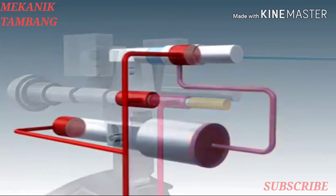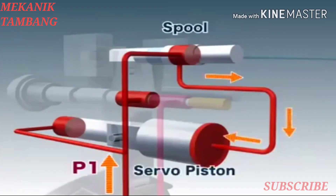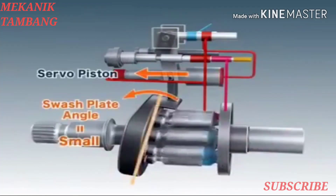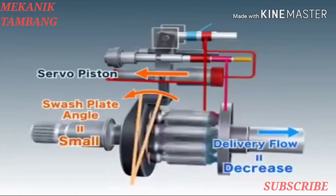Also, the delivery pressure of P1 passes through the spool and pushes against the larger side of the servo piston. As the servo piston moves, the inclination of the swash plate decreases, reducing the delivery flow.